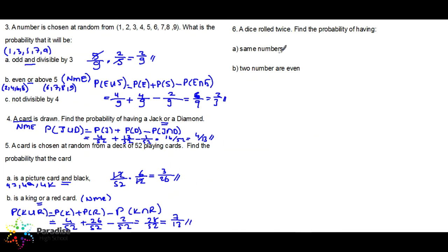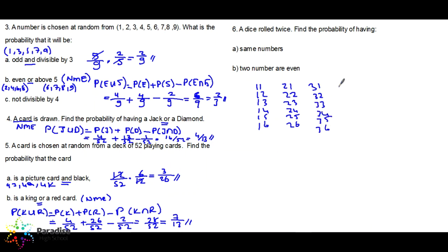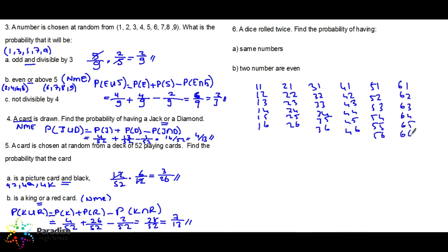A dice is rolled twice — find the probability of: same numbers, and two numbers are even. When a die is rolled twice, write out all outcomes: one-one, one-two, one-three, one-four, one-five, one-six; two-one through two-six; three-one through three-six; four-one through four-six; five-one through five-six; six-one through six-six. There are 36 outcomes altogether. Same numbers means: one-one, two-two, three-three, four-four, five-five, six-six.